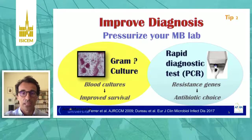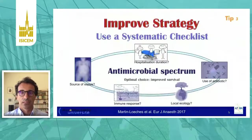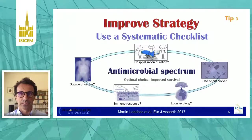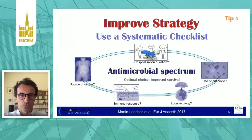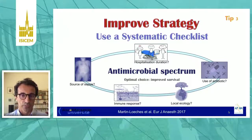Second, improve strategy. There are four types of strategies. Tip three is to use a systematic checklist to have the best choice for the spectrum of your treatment. As you know, the initial empirical spectrum of your treatment is associated with improved survival. If you miss that, your patient can die.